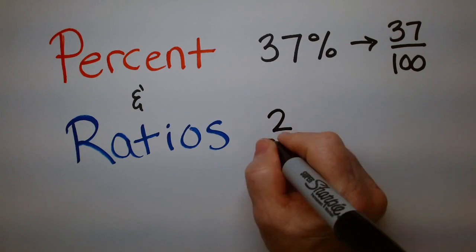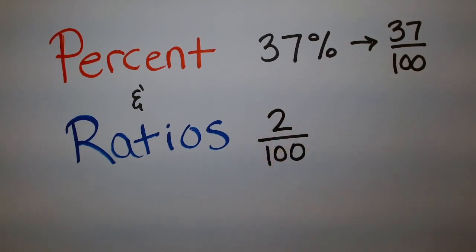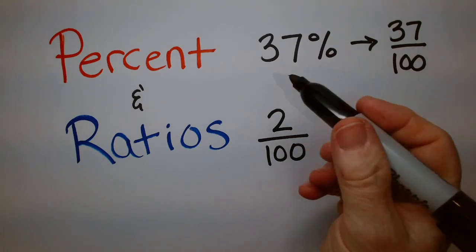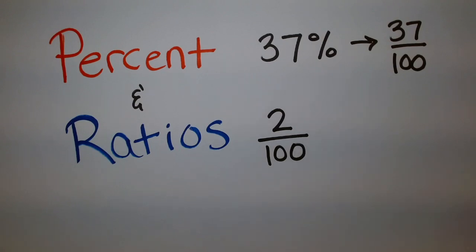So, for example, two out of every hundred people have red hair. That would be a ratio. You can turn ratios into fractions and percents, but they don't always have 100 on the bottom. For example, three out of every five people like dogs.